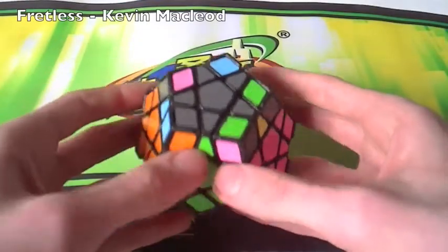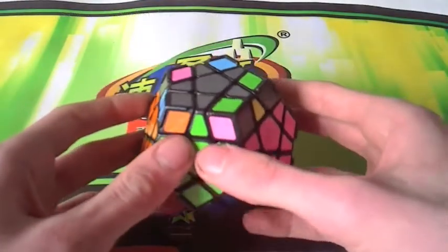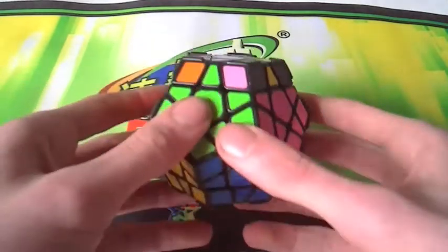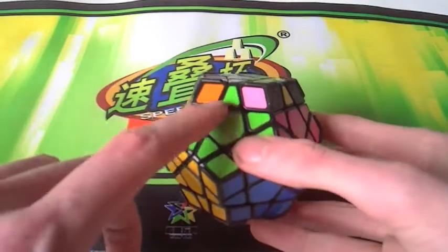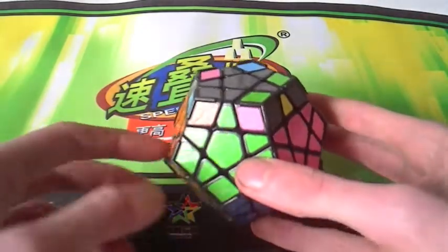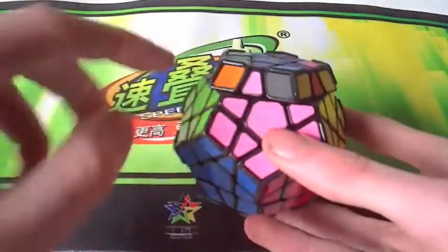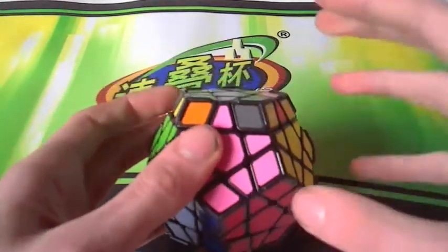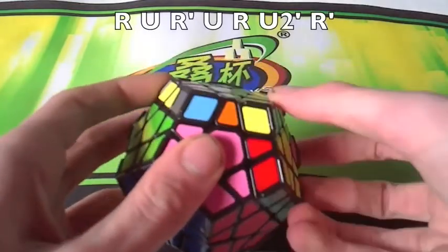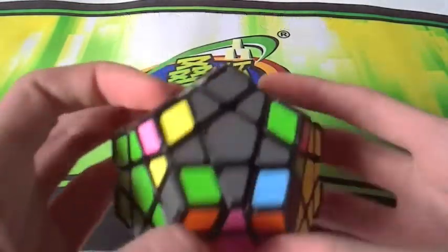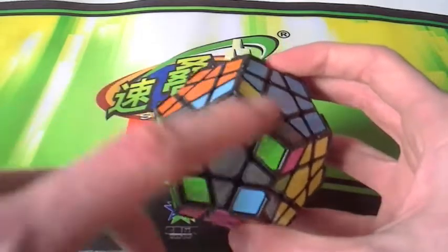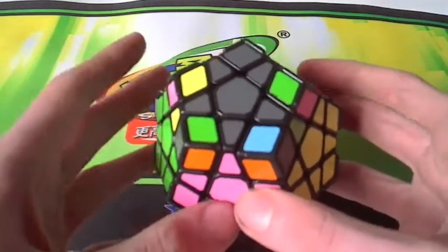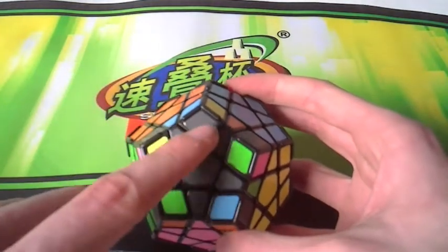So now we go to edge permutation. This is a very easy step. And it's an algorithm you already know. It's a Sune. What we need to do is first find one edge that's already matched up with its center. Or you can just move one over like here. It doesn't matter. You just need to get one like there. Then do a Sune. Like that. That should cycle these edges about. There are actually two cases of this. What I just did cycles these three.